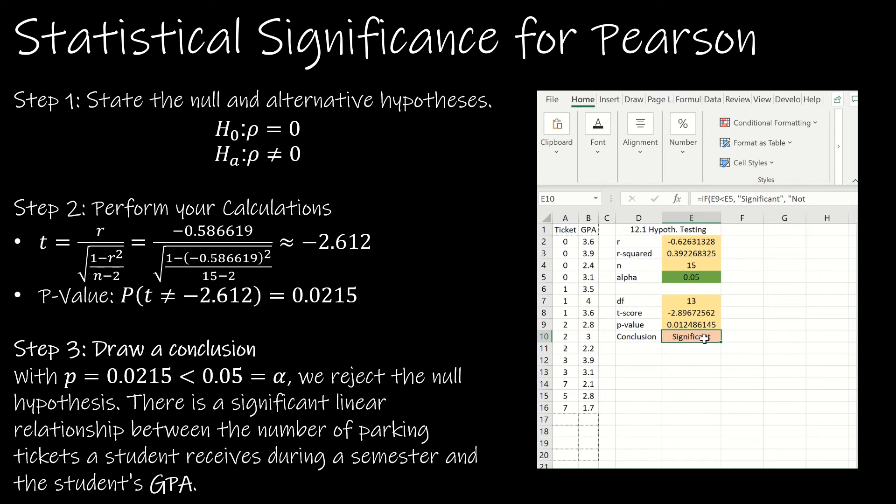Previously, I always used reject and fail to reject, but in this case I'm going to use significant or not significant. I'm still just comparing P to alpha, so if E9, which is P, is less than alpha, we would reject the null, which means it's significant. So instead of reject, I put significant, and then otherwise I'm going to put not significant. Notice the only thing I had to enter is the data in A and B and the alpha level. Everything else is calculated for me.